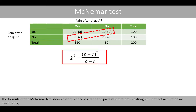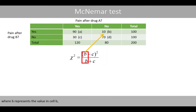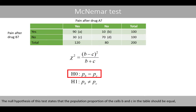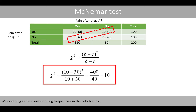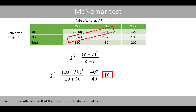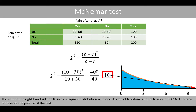The formula of the McNemar test shows that it is only based on the pairs where there is a disagreement between the two treatments, where B represents the value in cell B and C represents the value in cell C. The null hypothesis states that the population proportion of cells B and C in the table should be equal, whereas the alternative hypothesis states that they are not equal. Plugging in the corresponding frequencies, the chi-square test statistic is equal to 10. The area to the right-hand side of 10 in the chi-square distribution with one degree of freedom is equal to about 0.0016.